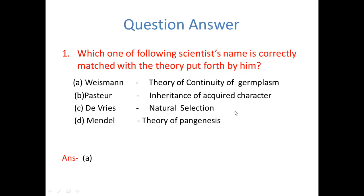So the first question is which one of the following scientists name is correctly matched with the theory put forth by him. A is Weismann's theory of continuity of germplasm, is 100% correct. Pasteur given the theory of inheritance of acquired character, it is wrong. De Vries, natural selection, it is wrong. Mendel's theory of pangenesis, it is wrong. So the theory of Weismann, the theory of continuity of germplasm given by Weismann is 100% correct.